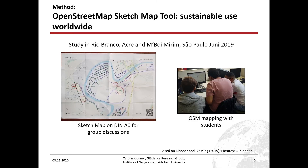We also used the approach of sketch maps in the Waterproofing Data project in the study areas in Rio Branco and Emboimirim in Brazil last year. We used the maps on DIN-A0 format for group discussions, because we realized it's very important to engage more people in the discussion in order to get more knowledge about the context. Here you see an example map where people mark their risk perception and elements at risk during a group discussion.